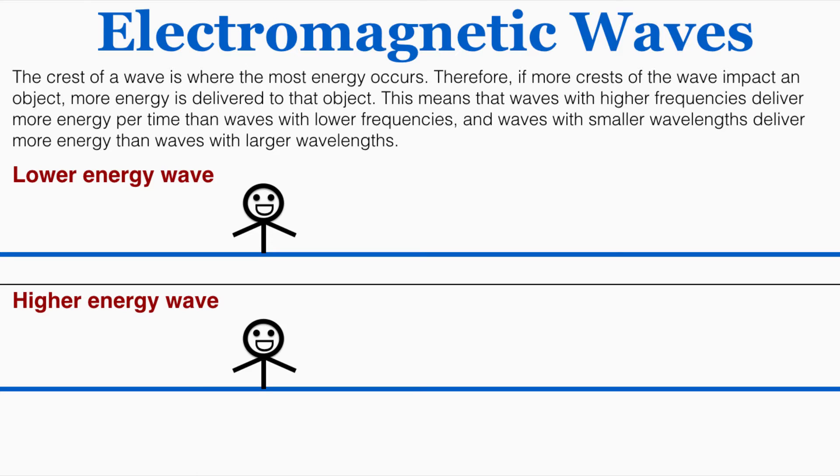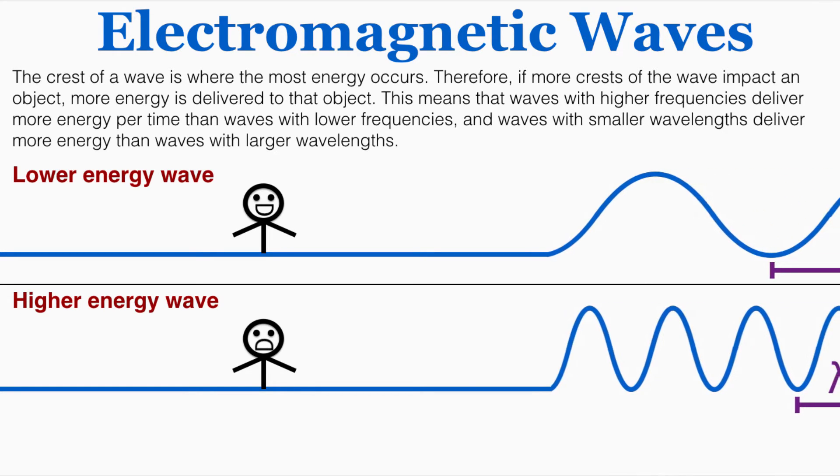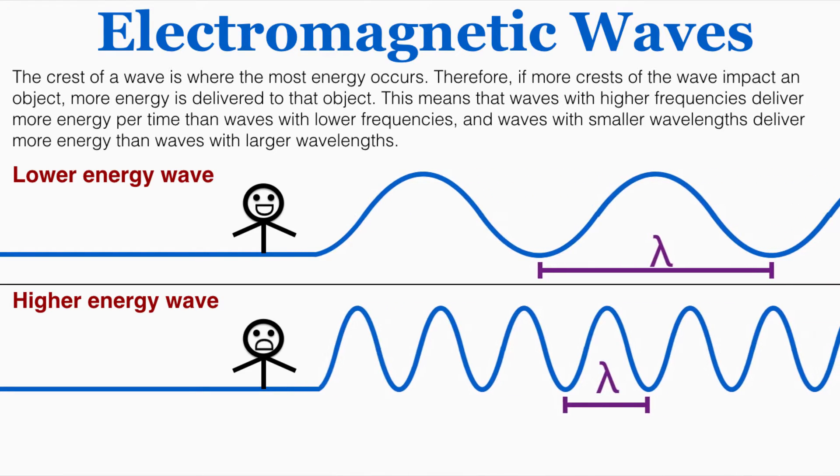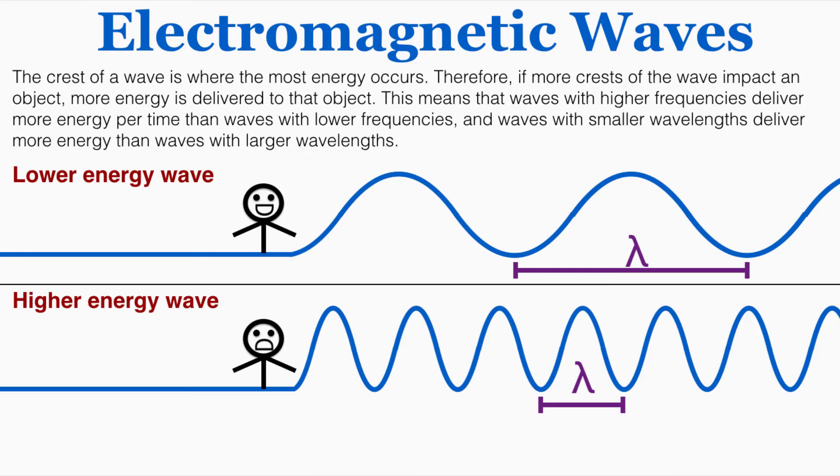A way that I visualize this is to imagine that I'm standing in the ocean, and there's a series of waves with a long wavelength coming toward me, and a series of waves with a shorter wavelength coming toward me, and I just imagine which one I would rather be hit by. And it becomes clear that the shorter wavelength waves are carrying more energy per time compared to the longer wavelength waves.